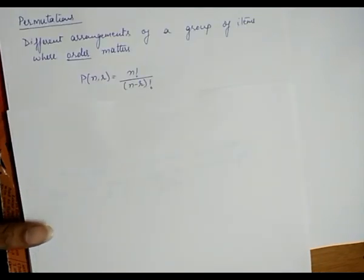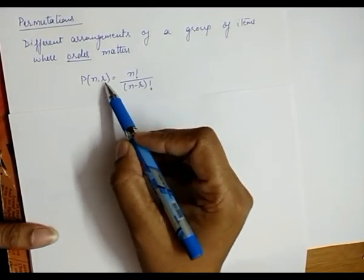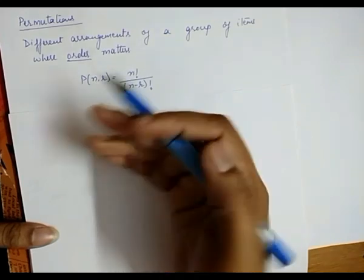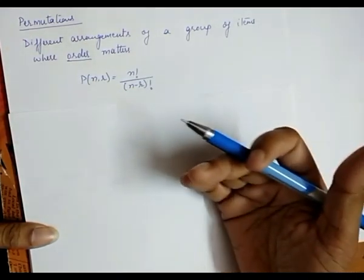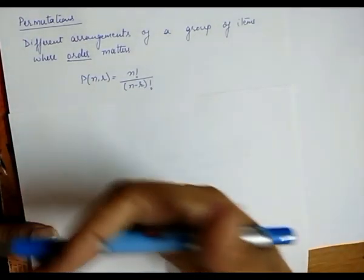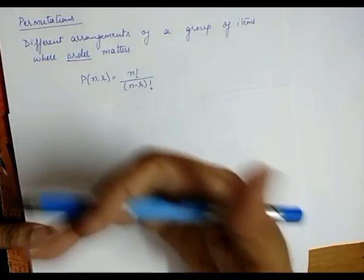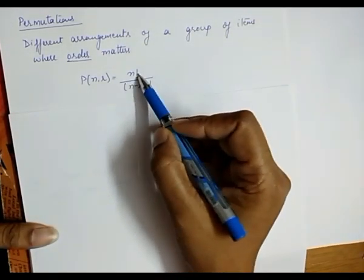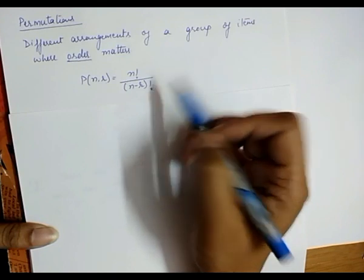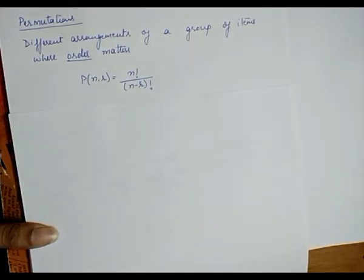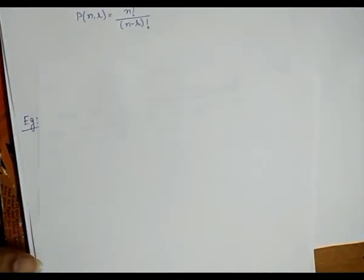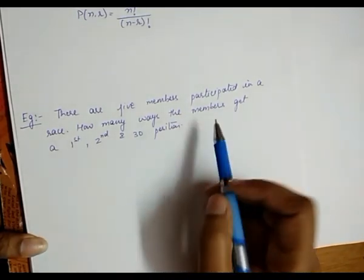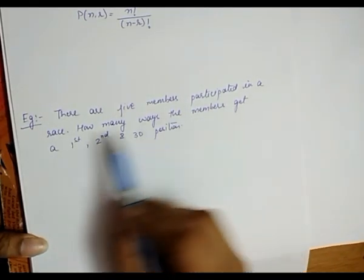To calculate the permutation, the formula is P(n, r), where n is the total number of items and r is the number of items we choose from n. The formula is: P(n, r) equals n factorial divided by (n minus r) factorial.